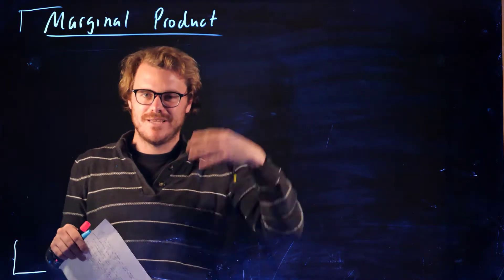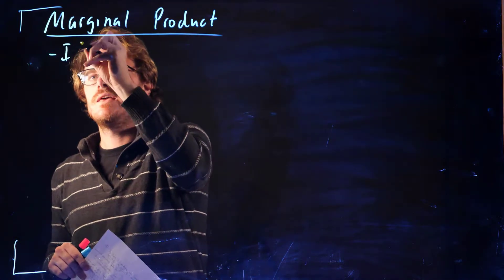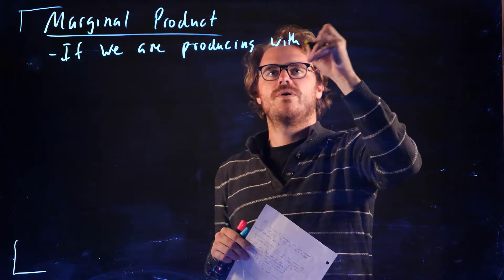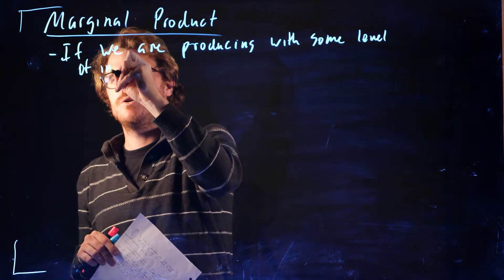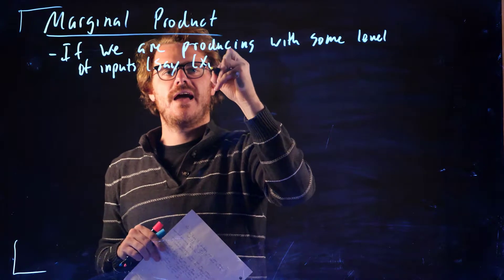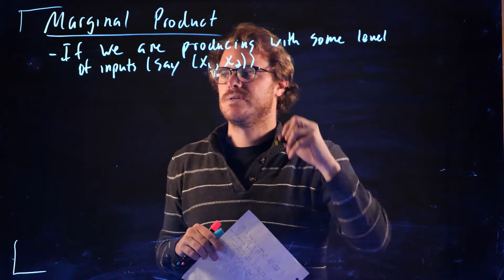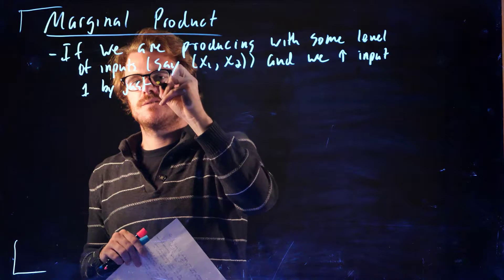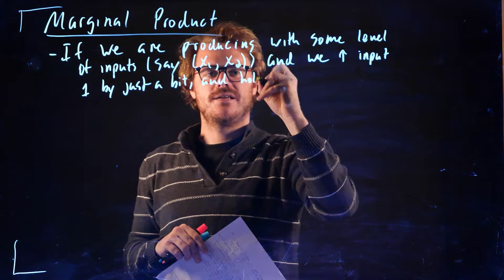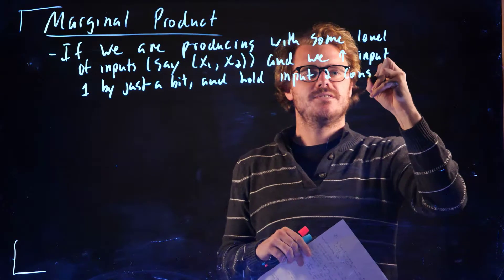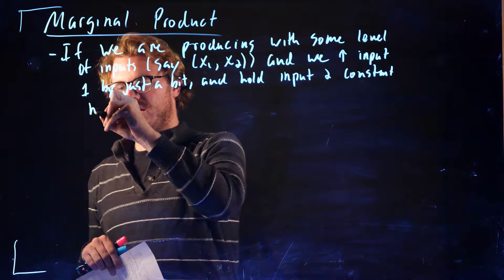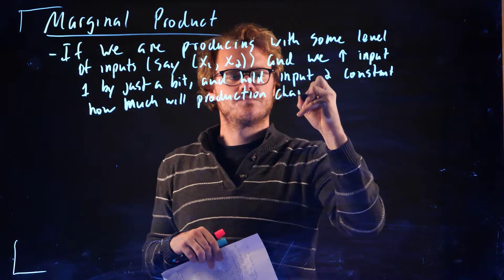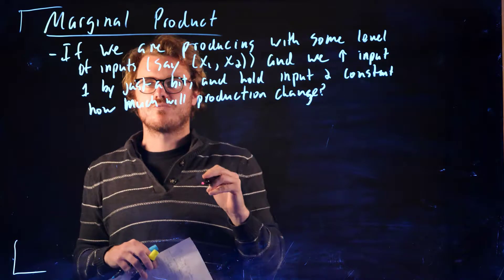So if we are producing with some levels of inputs — say x1 and x2, so that's the amount of input 1 and the amount of input 2 — and we increase input 1 by just a bit and hold input 2 constant, how much will production change? This is the marginal product of input 1.